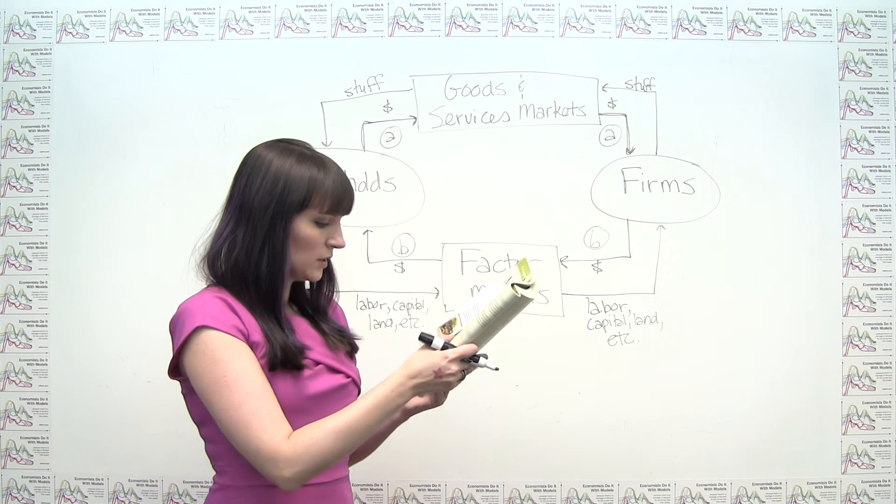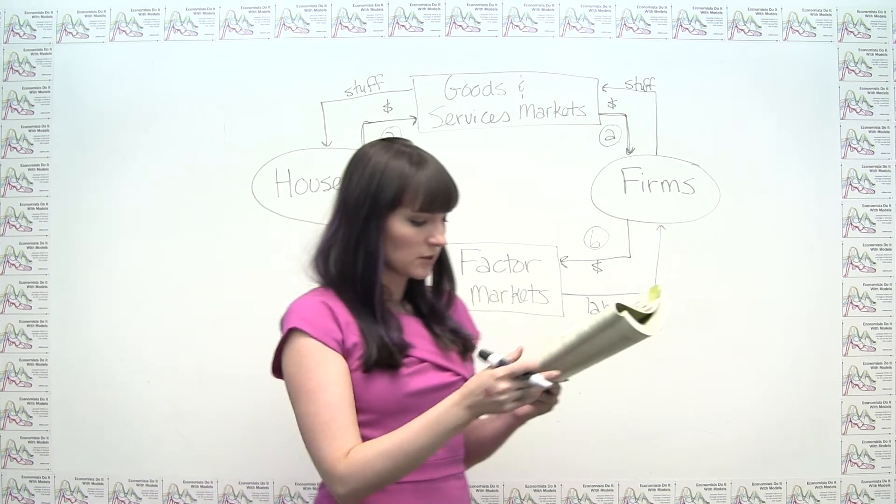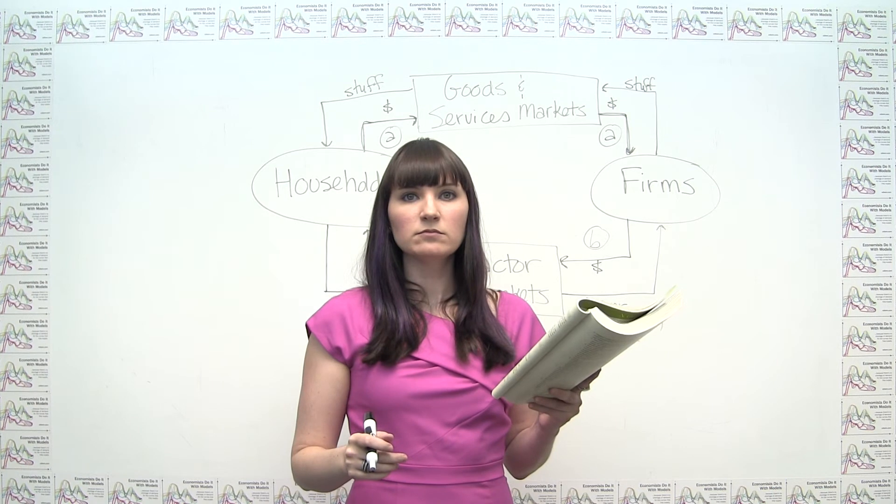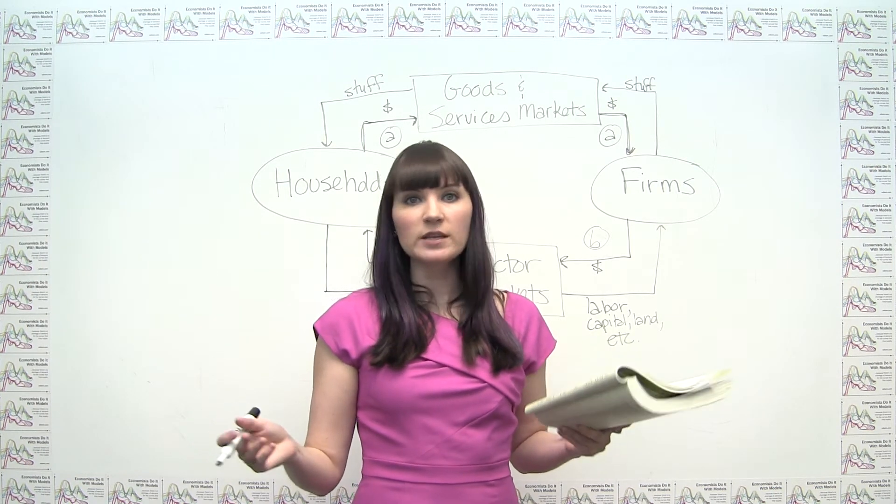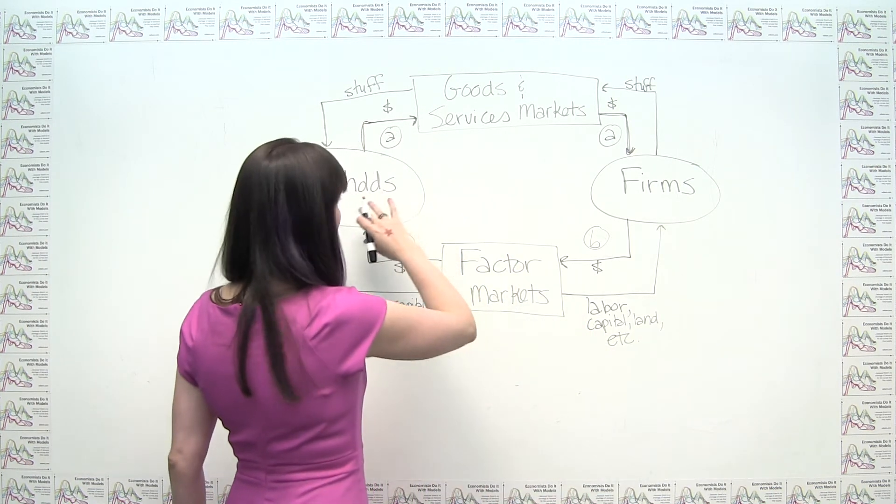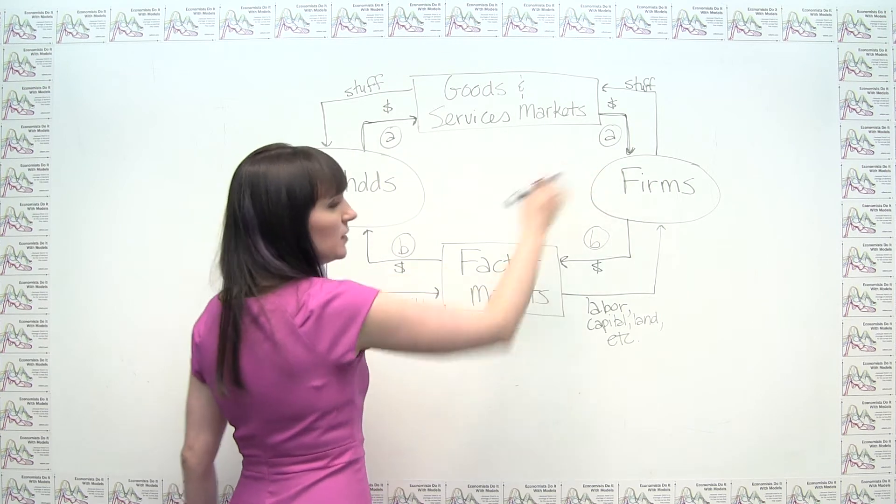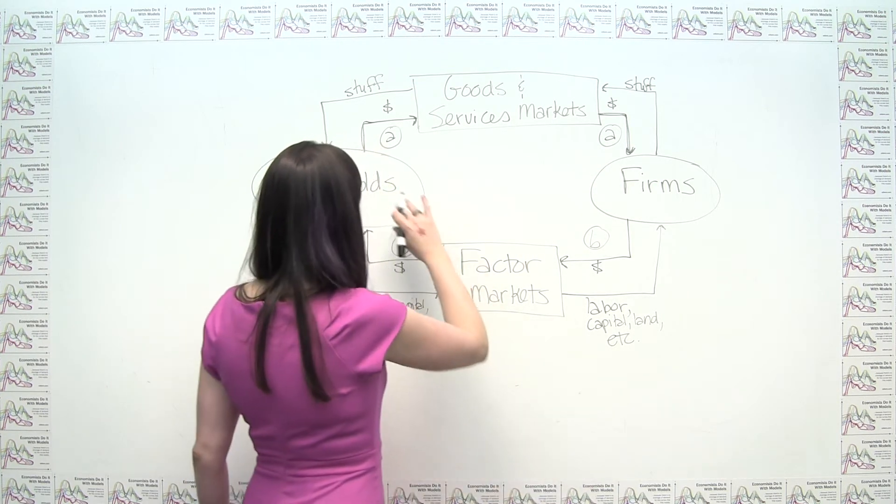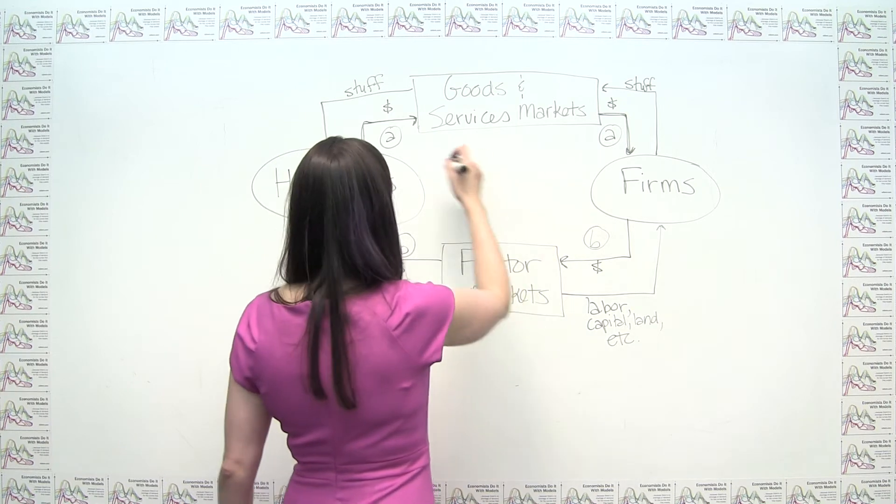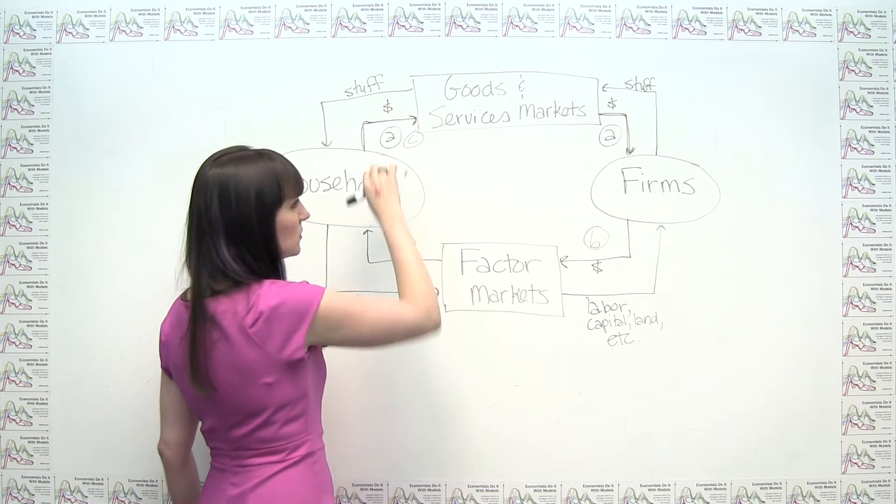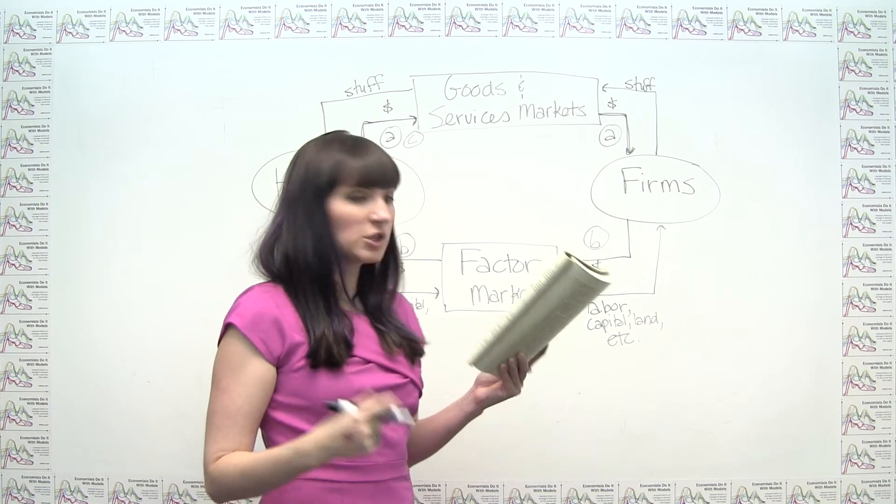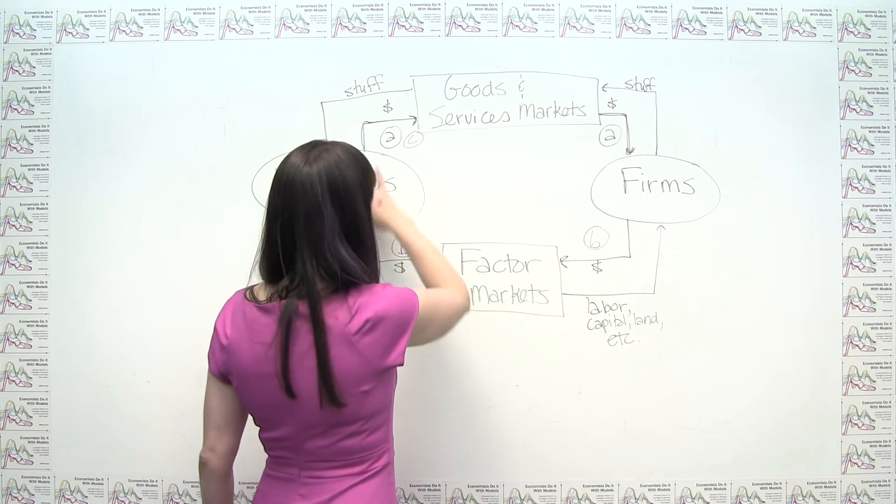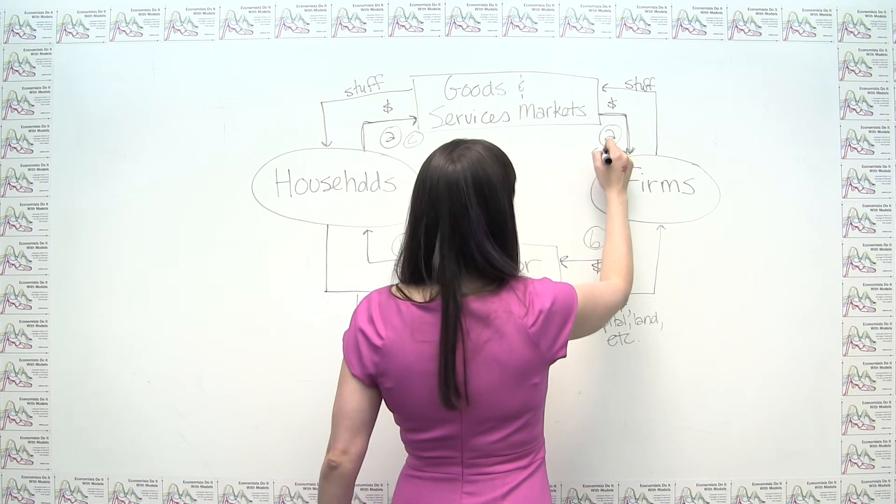Part C of the question. So Shana spends $30 to get a haircut. Again, we have a trade there. We have a trade happening in the goods and services market. So at the very least, we could think about the $30 as going from the household, or we have Shana in our household, going from the household to the firm.